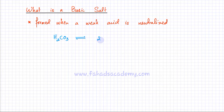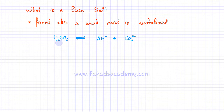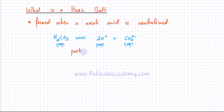When H₂CO₃ ionizes, it produces two H⁺ ions and one CO₃²⁻ ion. So when H₂CO₃ is dissolved in water it's going to produce two H⁺ ions and one CO₃²⁻ ion. But since it's a weak acid, it only partially ionizes.